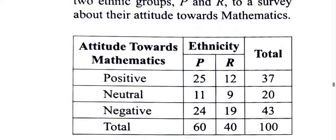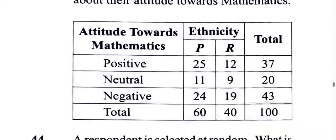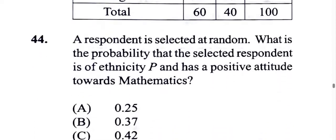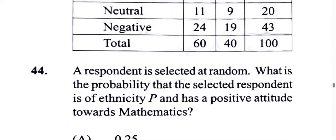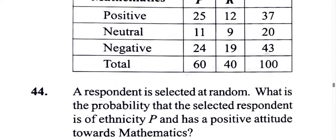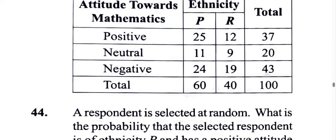They may say a respondent is selected at random from a particular ethnic group. In this case, they're not telling us if the respondents were selected from a particular ethnic group. They said a respondent was selected at random of the persons were surveyed obviously.